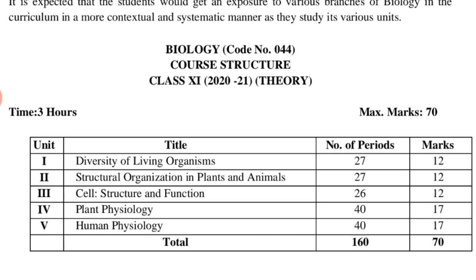If we talk about the total number of periods to complete these units: the 1st unit requires 27 periods, the 2nd unit 27 periods, the 3rd unit 26 periods, the 4th unit 40 periods, and the 5th unit 40 periods. Regarding marks in the examination: the 1st unit is 12 marks, the 2nd unit 12 marks, the 3rd unit 12 marks, the 4th unit 17 marks, and the 5th unit 17 marks — giving a total theory paper of 70 marks.